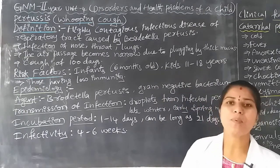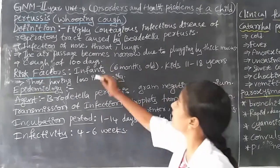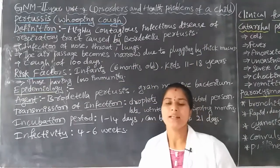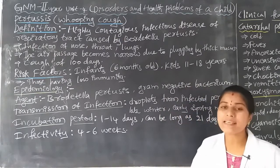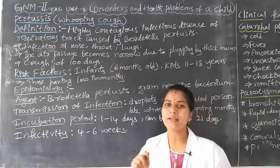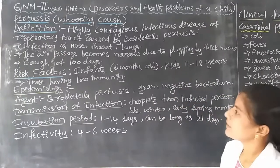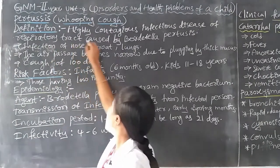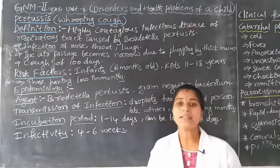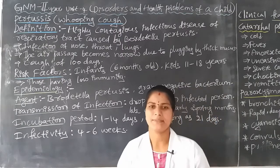What is the definition of pertussis? Pertussis is a highly contagious infectious disease. The disease is easily and highly spread from one child to another child. It mainly affects the respiratory tract.